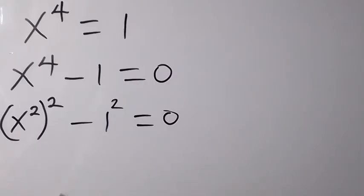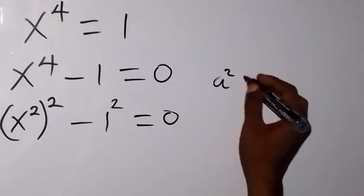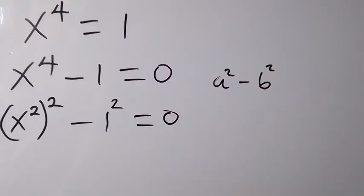So 1 square is still 1, and we can see this one follows difference of 2 squares, that is when we have the identity of the form a square minus b square.